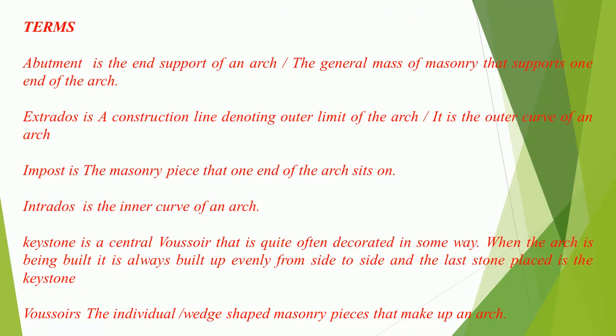Key terms: Abutment is the end support of an arch, or the general mass of masonry that supports one end of the arch. Extradose is a construction line denoting the outer limit of the arch; it is the outer curve of an arch. Impost is the masonry piece that one end of the arch sits on. Intrados is the inner curve of an arch. Keystone is the central voussoir, often decorated, and is always the last stone placed when building the arch.